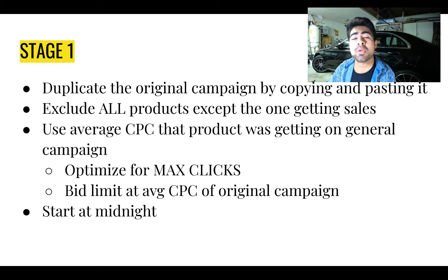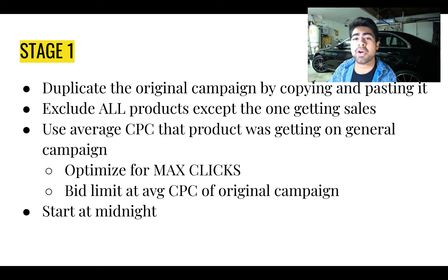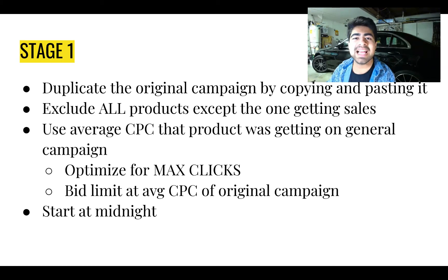What you want to do next is exclude all of the other products besides the one that got you sales in the first place, because this campaign is solely for that specific product. Make sure to exclude all other products and only let the one that got you sales continue to run. This is where we decide the cost per link click and the bidding strategy. You want to use the average cost per link click that the product was getting on the original campaign. So if the winning product had an average cost per link click of 25 cents, you want to set the max bid limit for this newly duplicated campaign at 25 cents — not higher and not lower.